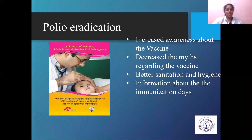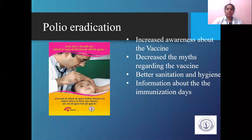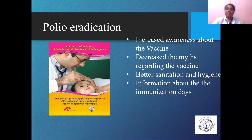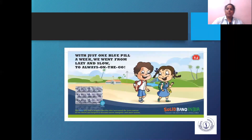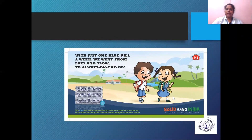Polio eradication could not have been possible without a mass approach. Mass media increased awareness about the vaccine, decreased myths regarding vaccines, promoted better sanitation and hygiene, and provided information about immunization. Polio days are announced through radio, television, internet, and social networking sites. Polio has been eradicated largely because of mass media. Another example is the NHM campaign with the iron supplement initiative regarding anemia in children.